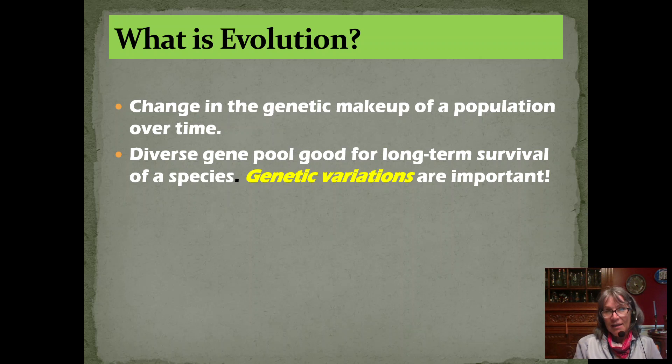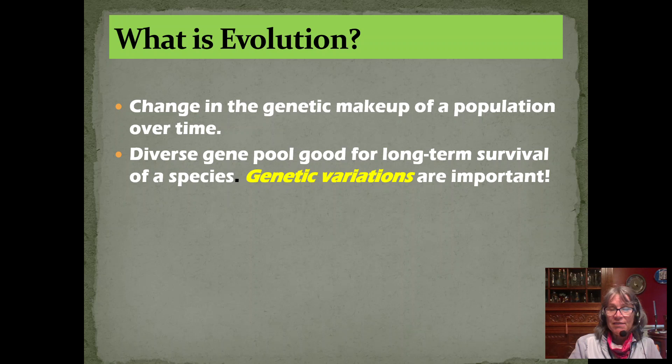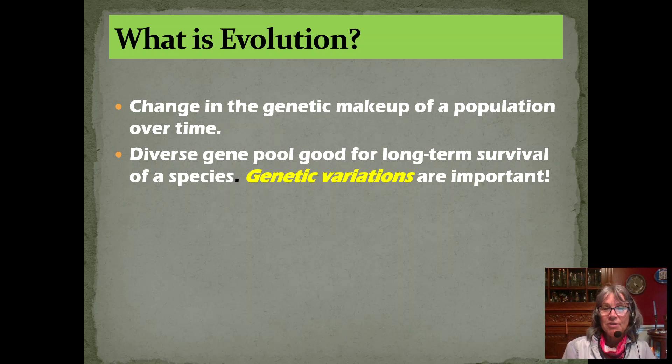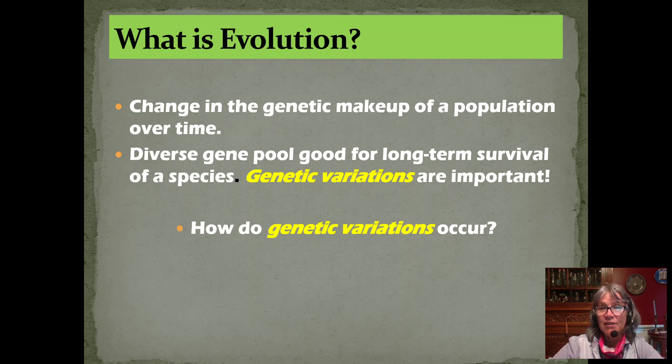Any change in the environment could have adverse impacts on every single individual. The easy example is a bacterial population — if all bacteria were exactly identical genetically with no variation and they were all susceptible to an antibiotic, then when you gave that antibiotic, boom, they'd all be gone. But genetic variation means some individuals would not be susceptible, and they would survive and pass on those genes for antibiotic resistance to their offspring. So we need variation in a population.